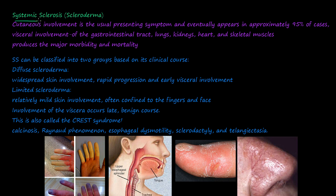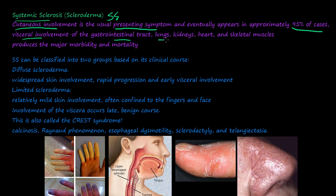Now we talk about systemic sclerosis or scleroderma, also abbreviated as SS. The most presenting symptom in scleroderma is cutaneous involvement, appearing in about 95% of cases, making it very specific to systemic sclerosis. The visceral involvement of the GI tract, lung, kidneys, heart, and skeletal muscles causes the majority of the morbidity and mortality of the disease.